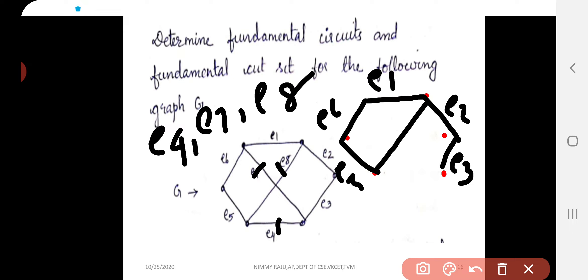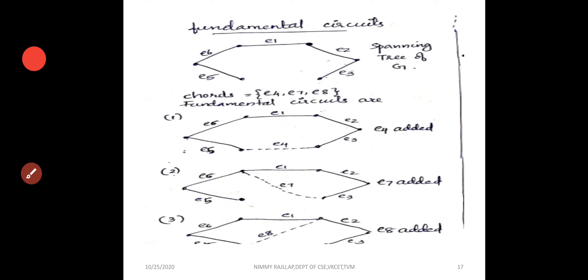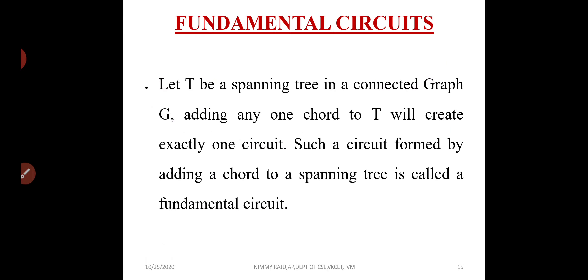This is the number of codes. The spanning tree is constructed, and the codes are E4, E7, and E8. E4 added, then E7 added, then E8 added — each gives one fundamental circuit. So the number of fundamental circuits equals the number of codes.